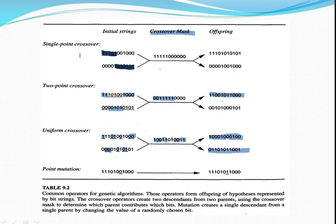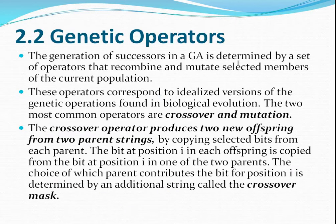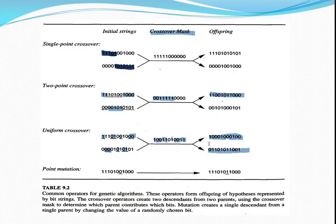Another type of genetic operator is mutation. The mutation operator takes only one parent string and generates only one new offspring. From the parent string, it randomly chooses one bit and changes that bit's value. By changing the value of that randomly chosen bit, it generates the new offspring.